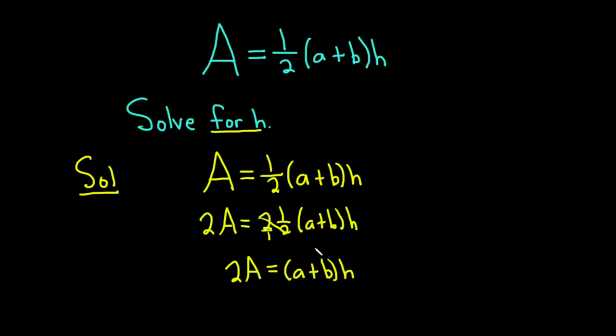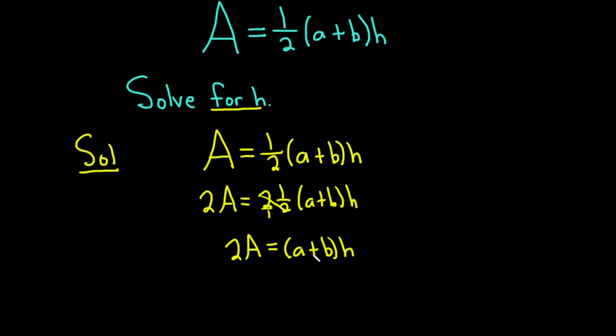So h is being multiplied by (a + b). So to get rid of this (a + b), you want to divide by (a + b). Dividing both sides by (a + b).